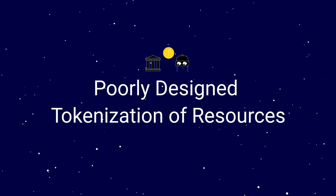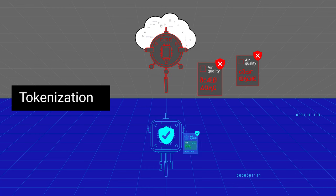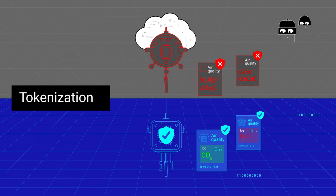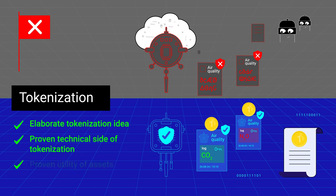Poorly designed tokenization of resources. Often, DePIN infrastructure resources are tokenized, turning into assets that can be transferred, sold, or used. However, if this process is poorly designed, the value of assets will be doubtful. For example, tokenizing access to sensor data will be pointless if that data is easily accessible to third parties. Moreover, not all resources provided by the infrastructure actually have value — raw, unverified data is unlikely to be a valuable asset. Tokenization must be carefully described, its technical implementation must be tested, and the resources and data turned into assets must have proven utility.